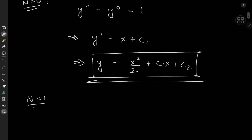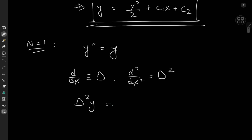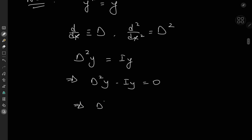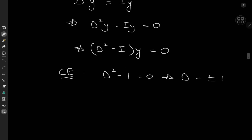For the case of n equal to 1, we have y double prime equal to y. Using operator notation, with d denoting the derivative operator with respect to x, the equation becomes d squared y equal to y, or equivalently d squared minus i applied to y equals 0. The characteristic equation is d squared minus 1 equal to 0, giving d equal to plus or minus 1. So the general solution is c sub 1 times e to the x plus c sub 2 times e to the negative x.